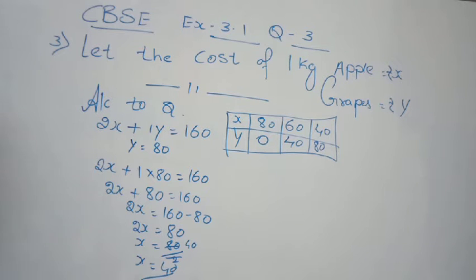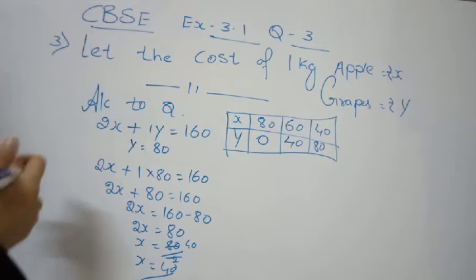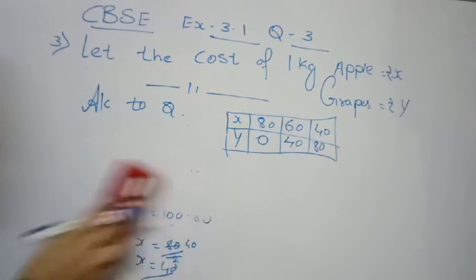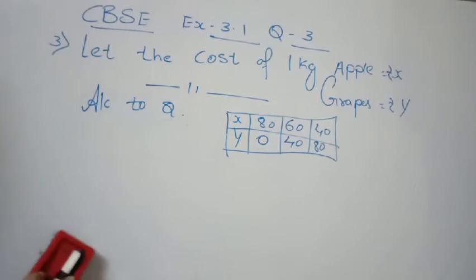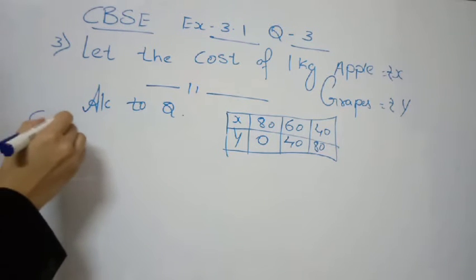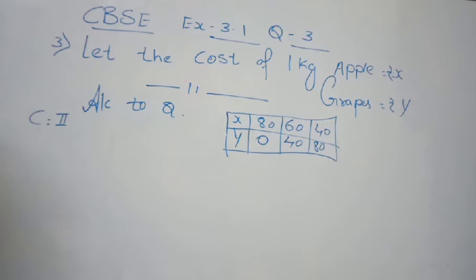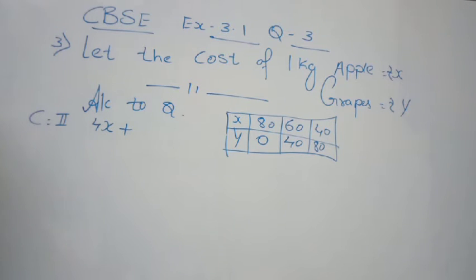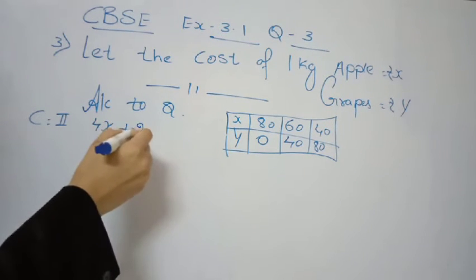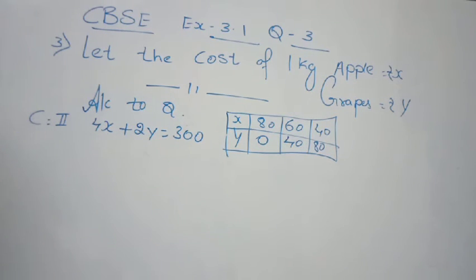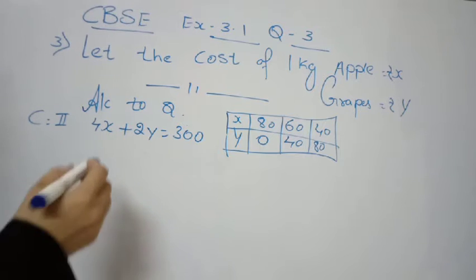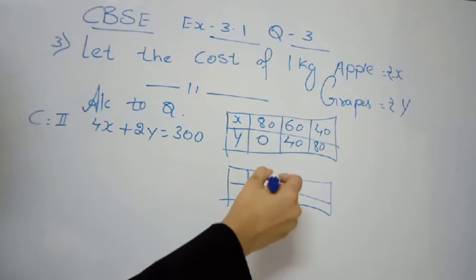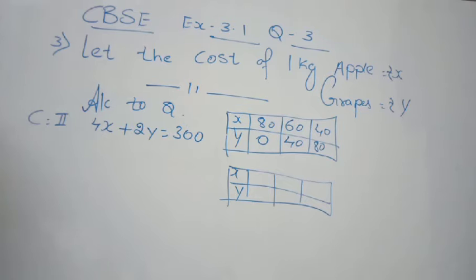Now we come to the second condition. For the second condition: 4 kg of apple is 4x, and 2 kg of grapes is 2y. So 4x plus 2y equals 300. This is the algebraic representation of the second condition. Now we prepare the table for geometric representation.